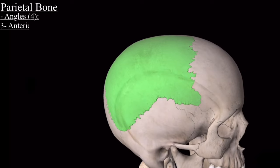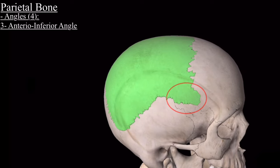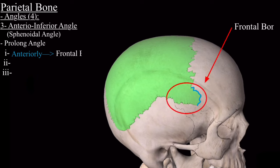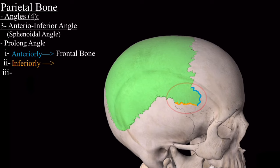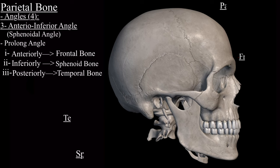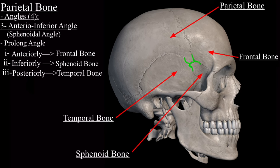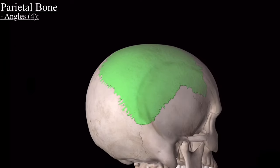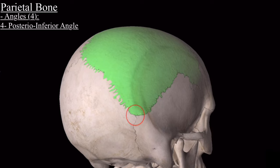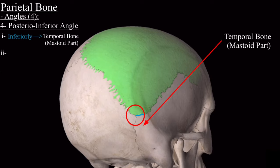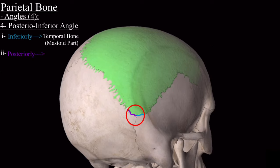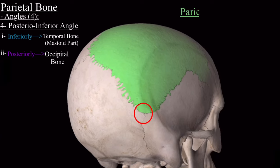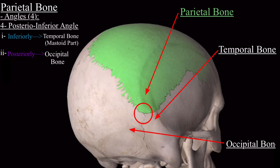The anterior inferior angle, also known as the sphenoidal angle, is a prolonged angle. Anteriorly it articulates with the frontal bone, inferiorly with the sphenoid bone, and posteriorly with the temporal bone. Together these four bones form an H-shaped suture called the pterion. The last is the posterior inferior angle, which is connected inferiorly with the mastoid part of the temporal bone and posteriorly with the occipital bone. This meeting point of the parietal, temporal, and occipital bone is called the asterion.